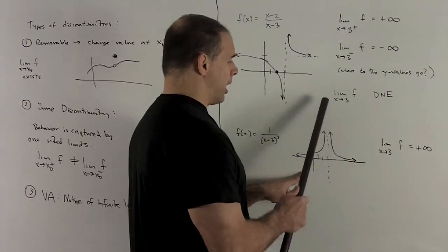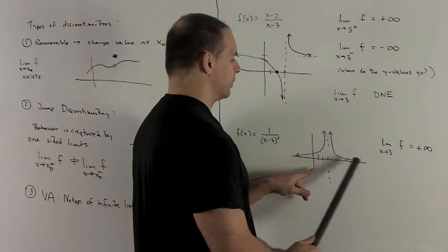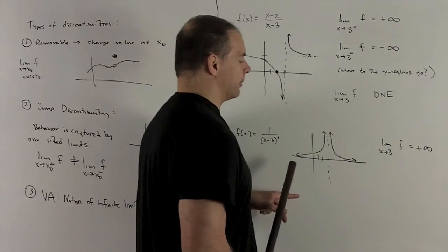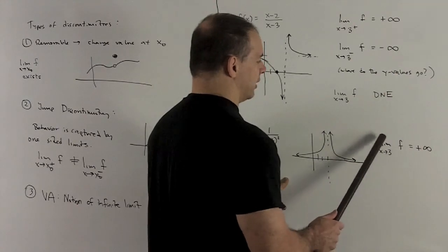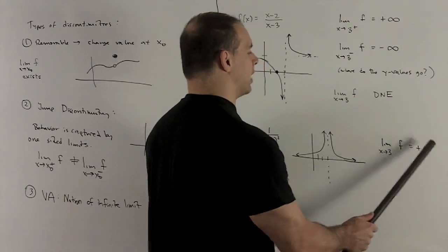So I come in from the right, and as I come in from the left. So in this case, the two-sided limit exists, and so I just say the limit x going to 3 of f is plus infinity.